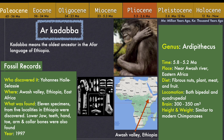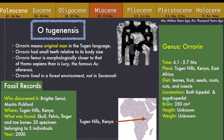Scientists named them Ardipithecus kadabba, who lived between 5.8 and 5.2 million years ago in the Awash Valley of Ethiopia. The name "kadabba" comes from the Afar language of Ethiopia, meaning "oldest ancestor," as at that time Ardipithecus kadabba was known to be the earliest ancestor of humans. But soon, more fossil discoveries were made in Kenya — even older, belonging to a time between 6.1 and 5.7 million years ago, discovered in the Tugen Hills of Kenya, East Africa.